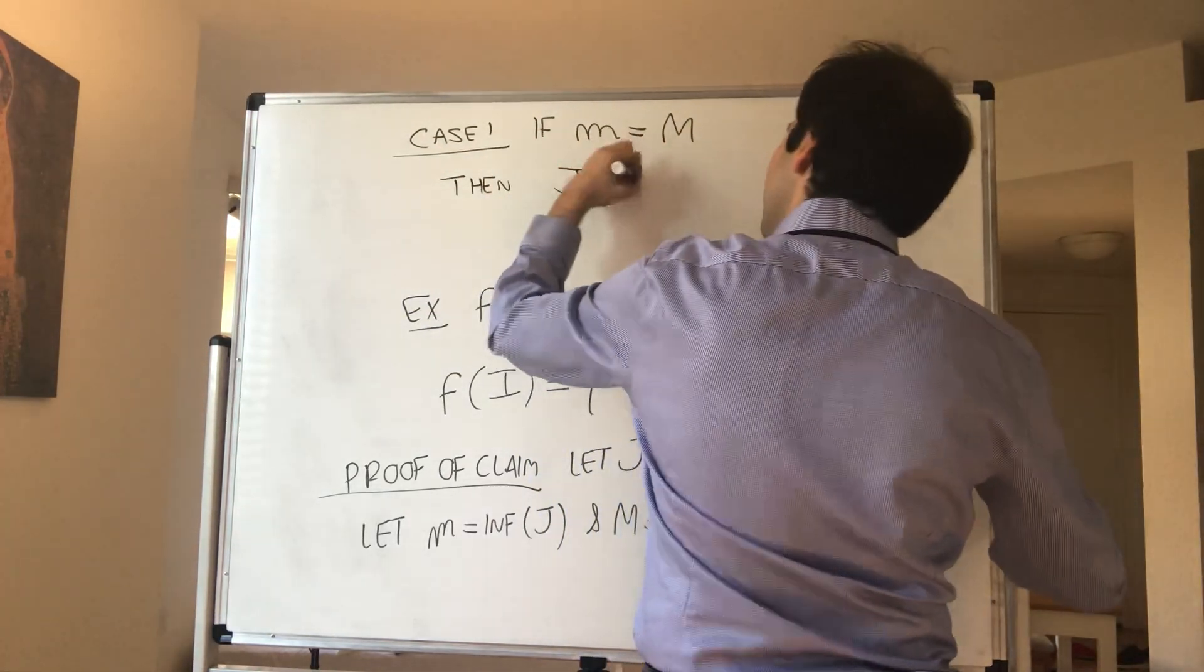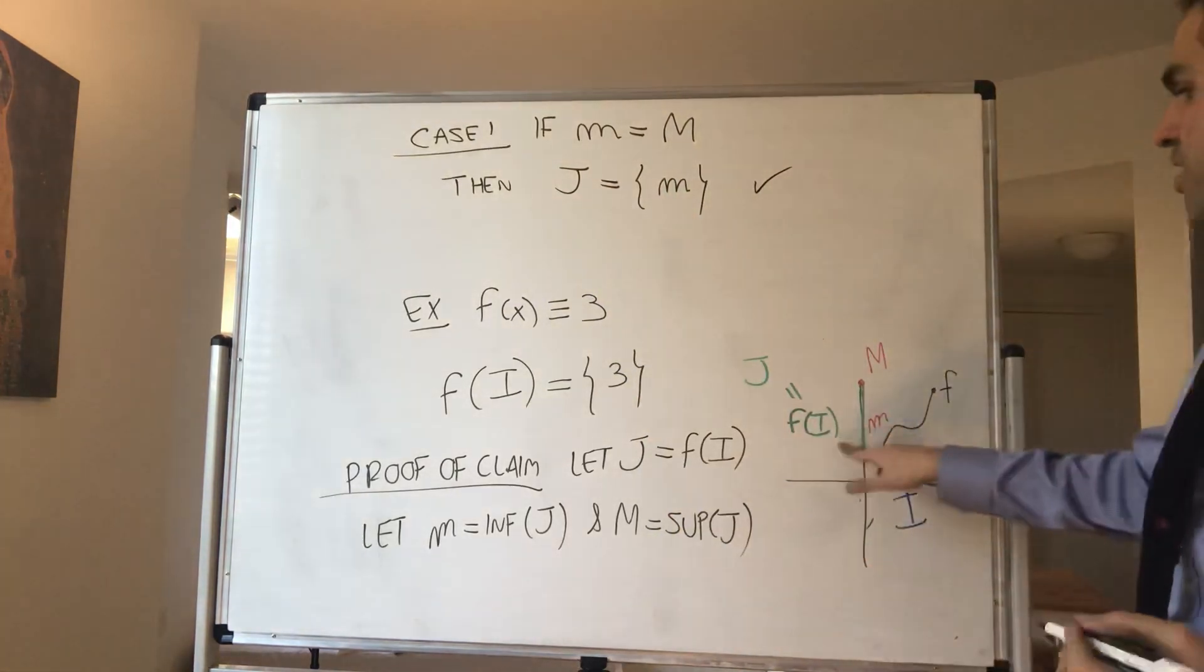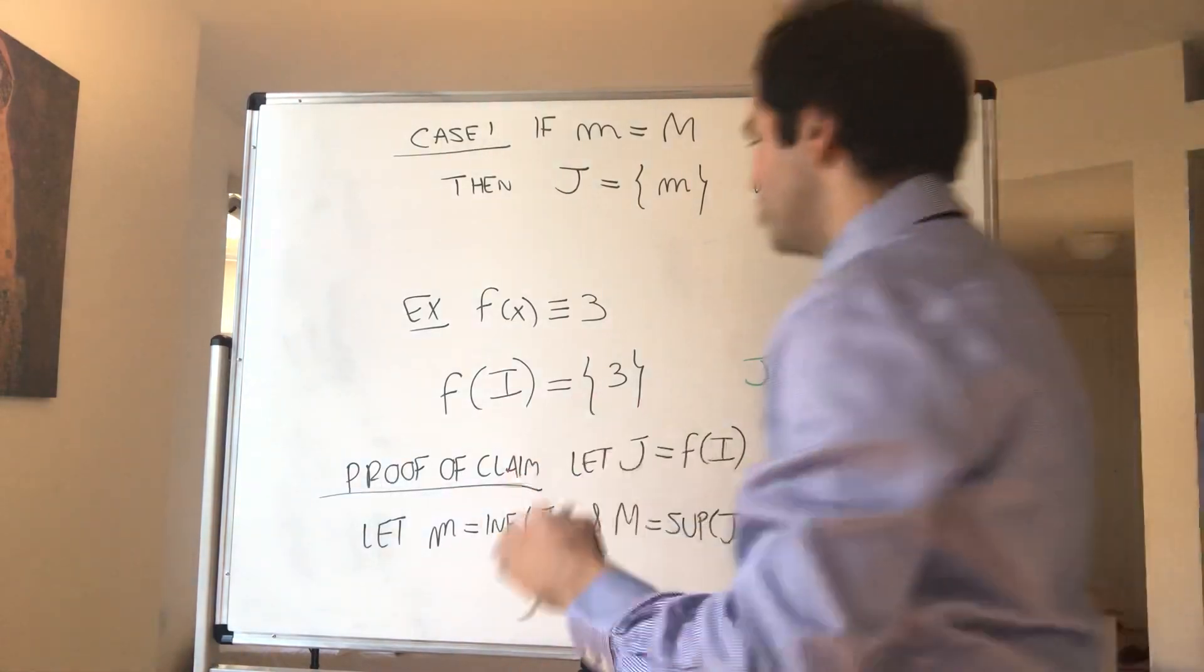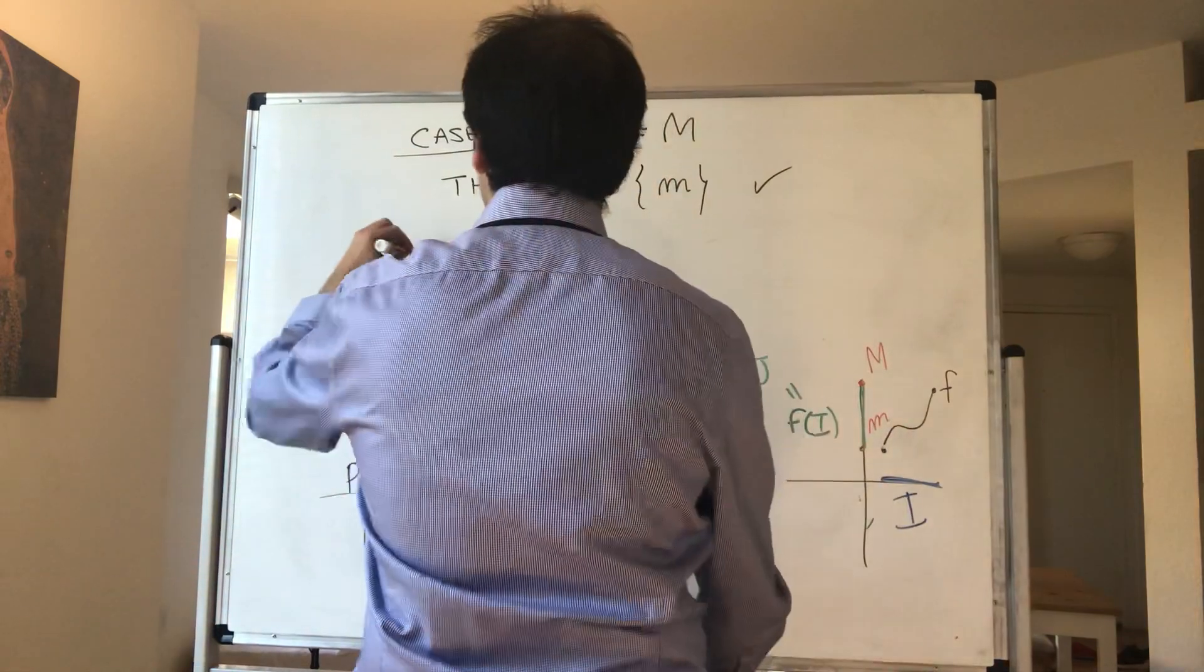Then your set is degenerate, so it's just a single point. Then J is just the point little m, and then we're done because then the image is just a point.